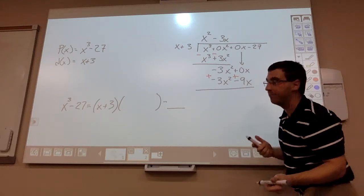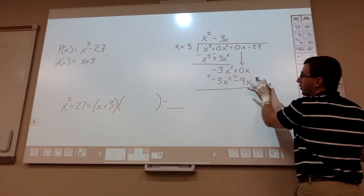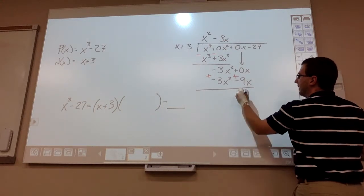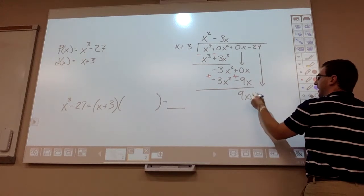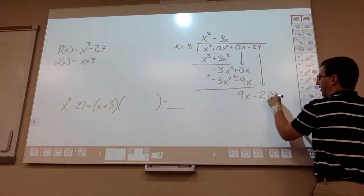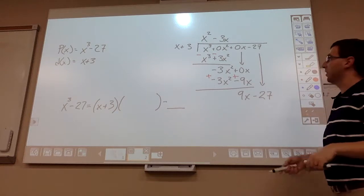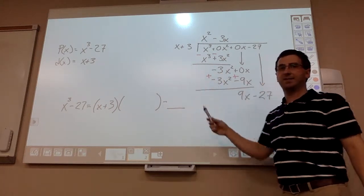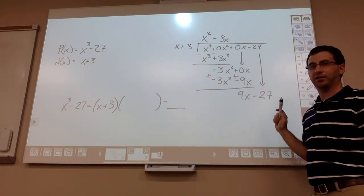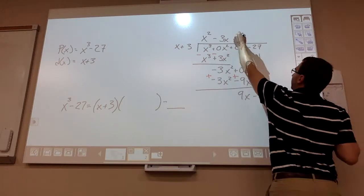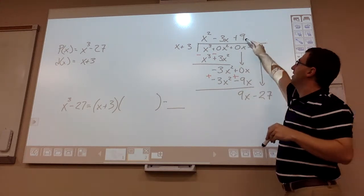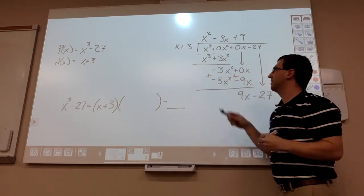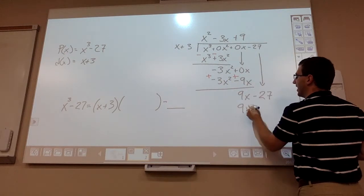Now here, 0 plus sign, well that should give you a 9x. And then we drop down the last term. Last but not least, what times x gets me a 9x? Well, it should be a positive 9. So now 9 times x, well that gets me a 9x.